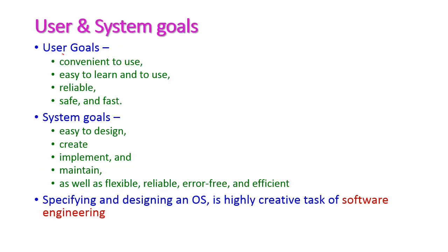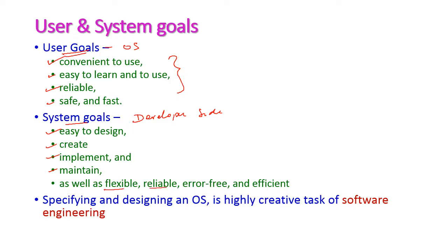From the user point of view, the operating system should be convenient to use, easy to learn and use, reliable, safe, and fast. From the developer side, the system should be easy to design, easy to implement, and easy to maintain. Apart from that, it should be flexible, reliable, error-free, and efficient. These are the goals expected by the operating system developer.